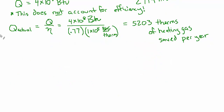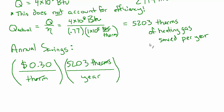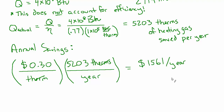All that's left is the annual savings. At 30 cents per therm times 5,203 therms per year, units cancel and we get $1,561 per year saved by implementing this night setback thermostat.